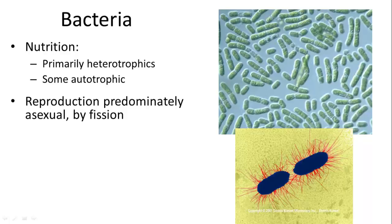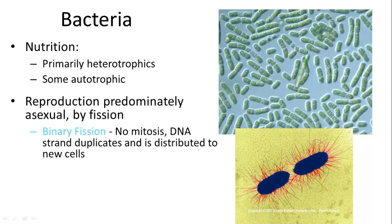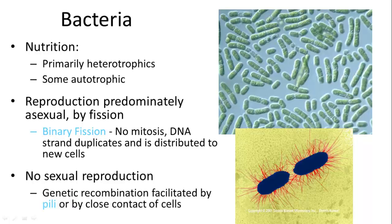Reproduction is primarily through binary fission. This is not mitosis, although it is somewhat similar — there's no lining up of chromosomes because there is only one. There is no sexual reproduction; however, some genetic recombination events do occur with the help of a structure called pili, which help congregate two bacteria so they can exchange genetic information.